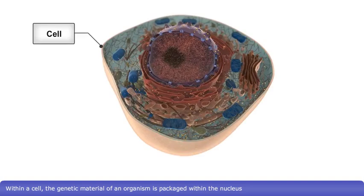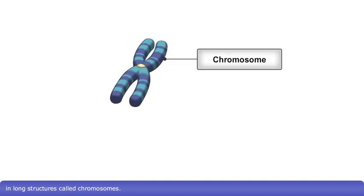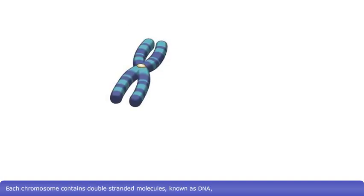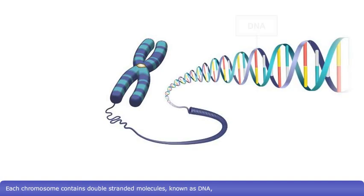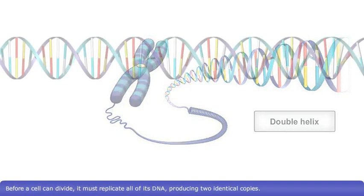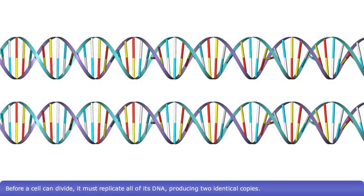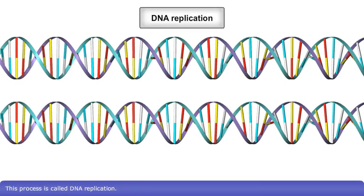Within a cell, the genetic material of an organism is packaged within the nucleus, in long structures called chromosomes. Each chromosome contains double-stranded molecules known as DNA, which have a double helix shape. Before a cell can divide, it must replicate all of its DNA, producing two identical copies. This process is called DNA replication.